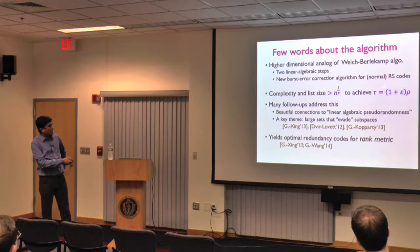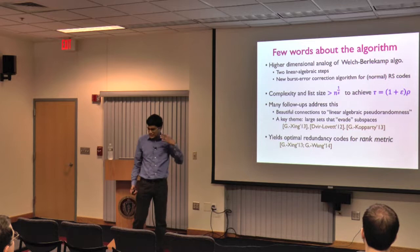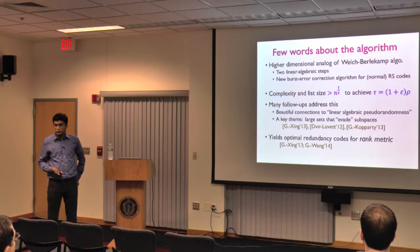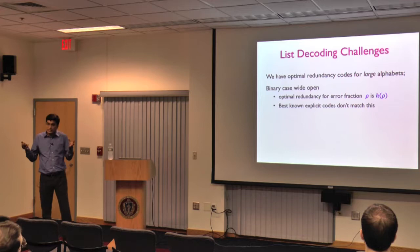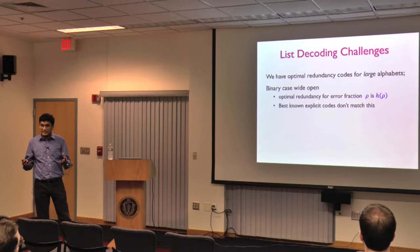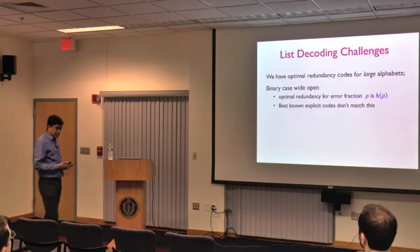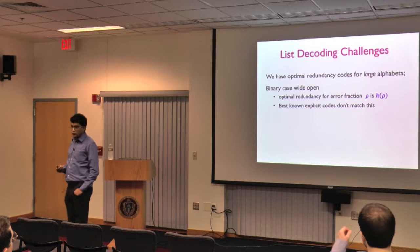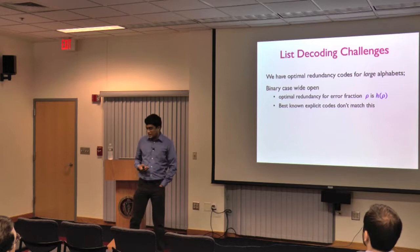The main punchline: with list decoding, you can efficiently approach redundancy close to the error fraction, even for worst-case errors, at the cost of a large alphabet growing with epsilon. Over large alphabets we have basically optimal redundancy codes. Over bits, the best redundancy for error fraction rho is the entropy h(rho), but we don't know any code constructions that come close to this — matching the large-alphabet optimality over bits is wide open.